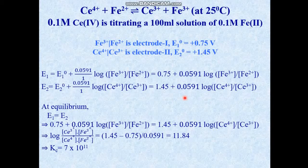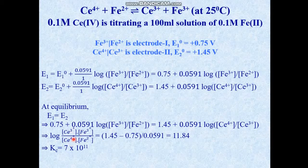When the reaction reaches equilibrium, the electrode potentials of both reactions become equal: E₁ = E₂. Equating the right-hand sides of the two Nernst equations, we obtain an expression where the numerator contains product concentrations and the denominator contains reactant concentrations — this is the equilibrium constant Kc. So log Kc = 11.84, giving Kc = 10^11.84 = 7.7 × 10¹¹.